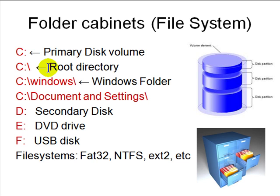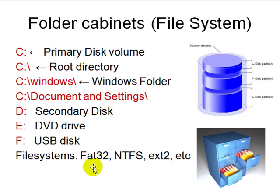C:\Documents and Settings is where Windows puts your personal files. D, E, F could be secondary drives, DVD drives, or USB drives. A volume is basically a hard disk, and you can divide it into partitions — each partition can be NTFS, Linux ext2, or FAT32. Linux can read NTFS and FAT32, but Windows cannot read Linux partitions. When you boot into Windows, it may try to format your Linux partition, so be careful not to let it format unknown file systems.